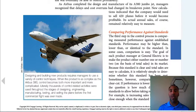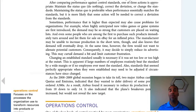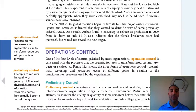Anyone you see with a picture and caption — pay close attention because they're there for a reason, as good learning opportunities. Operations control focuses on the processes the organization uses to transform resources into products or services — this is your mainstay. The operational director, manager, or supervisor deals with day-to-day activities. Preliminary control attempts to monitor the quality or quantity of financial, physical, human, and information resources before they actually become part of the system — that's our pre-audit system.